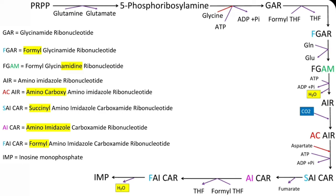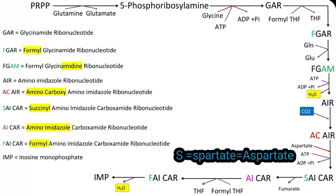In the next reaction, ACAIR is converted to SAICAR — Succinyl Aminoimidazole Carboxamide Ribonucleotide. Taking S as a clue, S stands for aspartate. Aspartate reacts with ACAIR to form SAICAR. This condensation also requires energy, so ATP is utilized. The enzyme catalyzing this reaction is Synthetase.